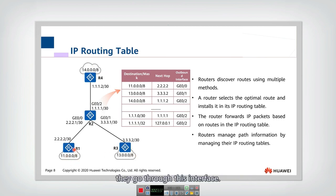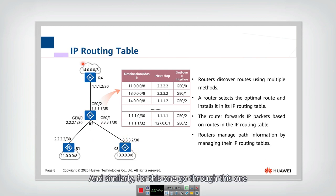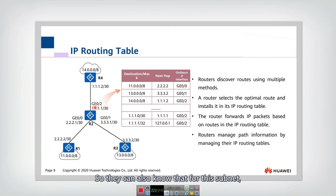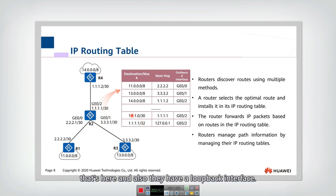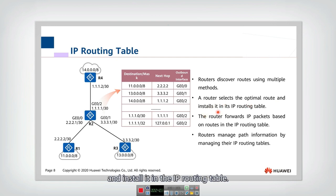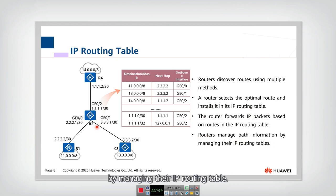For this subnet, the packet goes through this interface. For this subnet, they go through this interface. Similarly, for other subnets, they go through their corresponding interfaces. We also have these three subnets, and for each one the router knows which interface to use. There is also a loopback interface. A router can select the optimal route and install it in the IP routing table, and manage path information by managing the routing table.